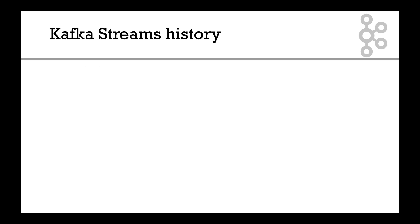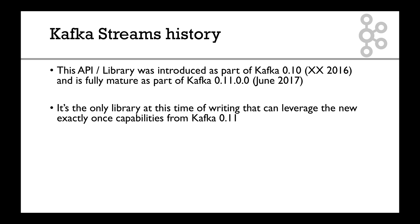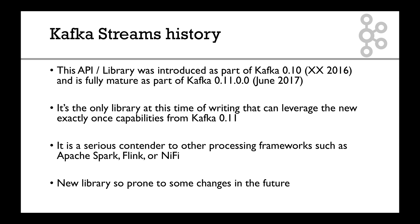A bit of history about Kafka streams: this API was introduced as part of Kafka 0.10, sometime in 2016, and became fully mature as part of Kafka 0.11 in June 2017 — so it's a really new library. The API can change and will change, but what you're learning here is still very applicable in case of any changes. It's the only library that can leverage the new exactly-once capability from Kafka 0.11, and it is a serious contender to other streaming processing frameworks such as Spark, Flink, or NiFi. What you need to learn are the ideas behind it and the API — any changes in the future will be somewhat minor.